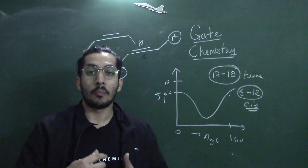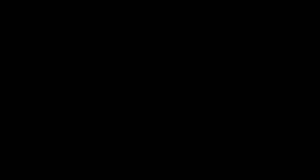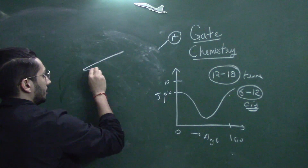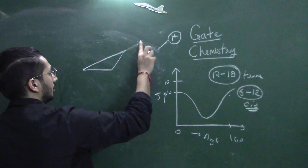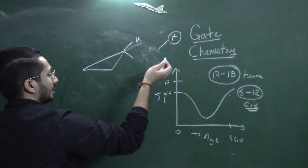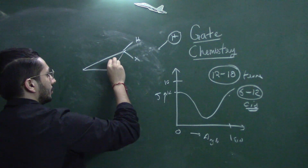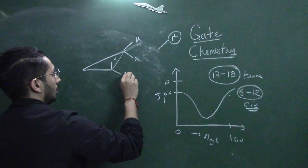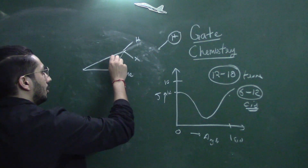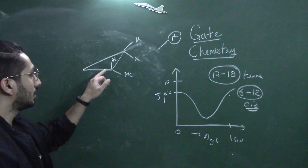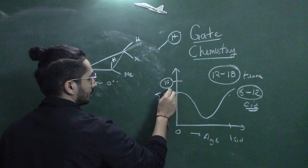Now, what happens in cyclopropane — why do we observe an opposite shift? Let me draw the cyclopropane. Here is my cyclopropane ring. Let's say this is my hydrogen, and over here we have a methyl or some X group. For cis coupling in the cyclopropane ring, both hydrogens are above the plane, and you will see that the dihedral angle between the hydrogens is approximately 0 degrees, so the J value should be around 12 Hz.